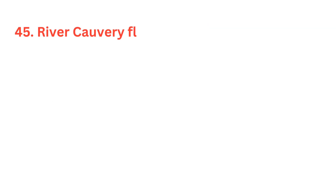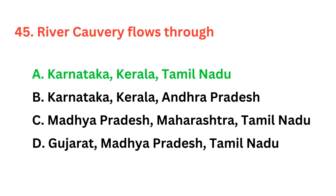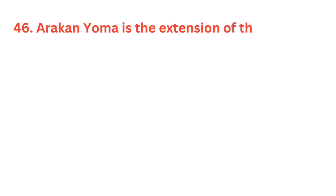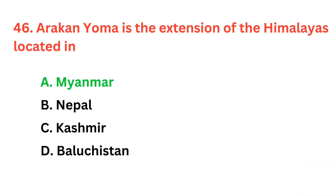River Kaveri flows through? The right answer is option A — Karnataka, Kerala and Tamil Nadu. Arakan Yoma is the extension of the Himalayas located in? The correct answer is option A, Myanmar.